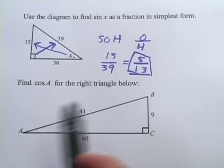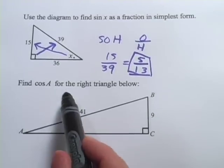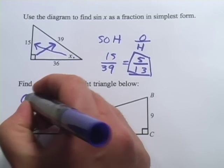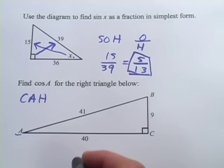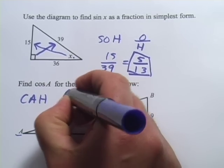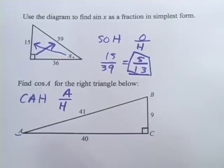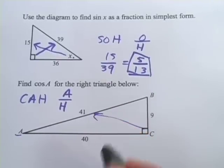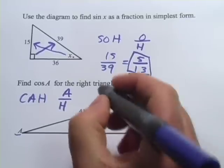All right, last one here. This one says find the cosine of A for the right triangle below. Well, here's A, but cosine, that's the CAH in SOHCAHTOA. So it's going to be adjacent over hypotenuse. Well, hypotenuse is easy. It's the one opposite the right angle. So that's 41. That'll go on the bottom of our fraction.